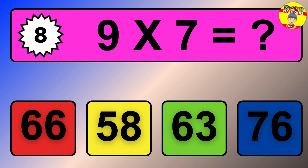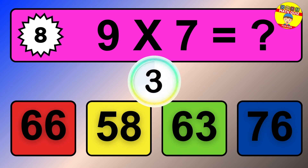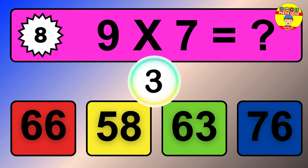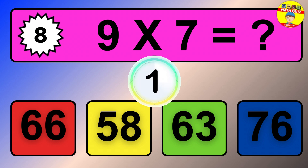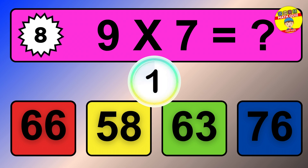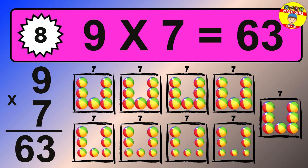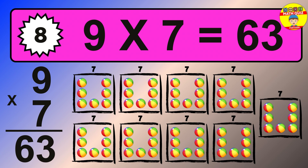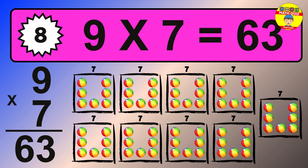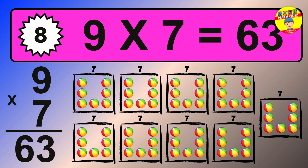Question 8. 9 times 7 equals what? The answer is 9 times 7 is 63. To calculate, we have 9 groups with 7 balls each one. So how many balls do we have? 63 balls.